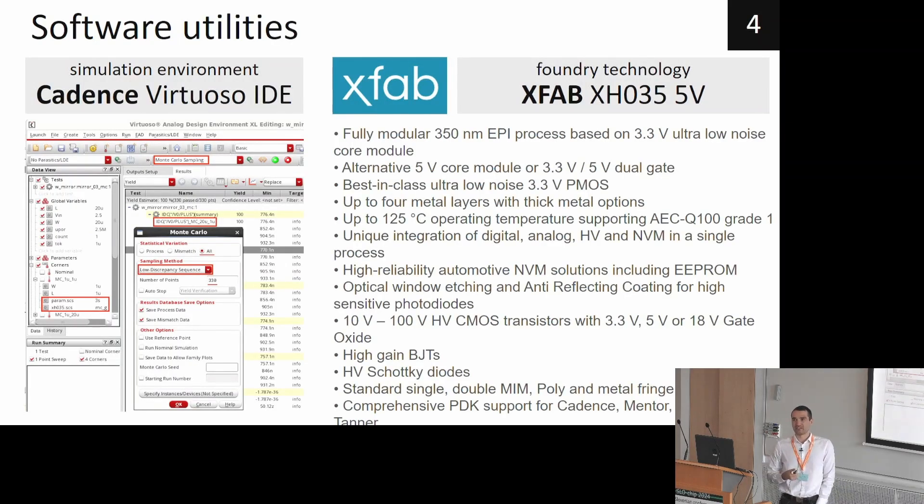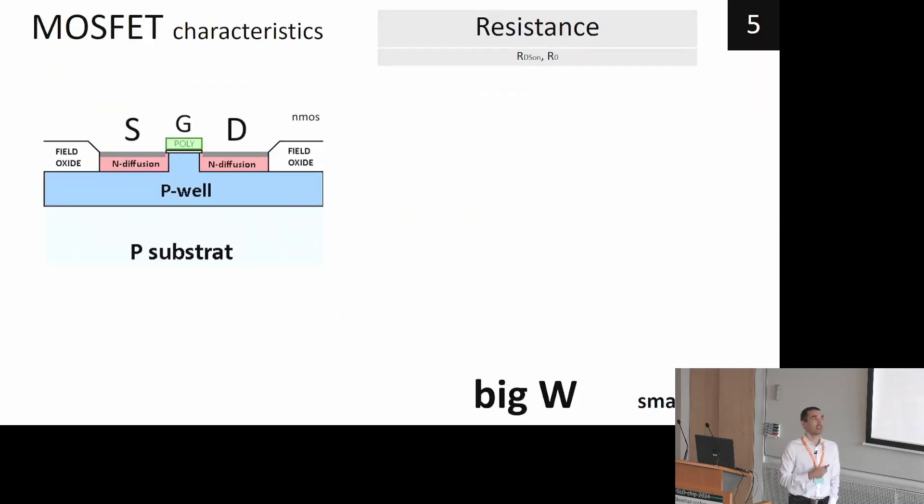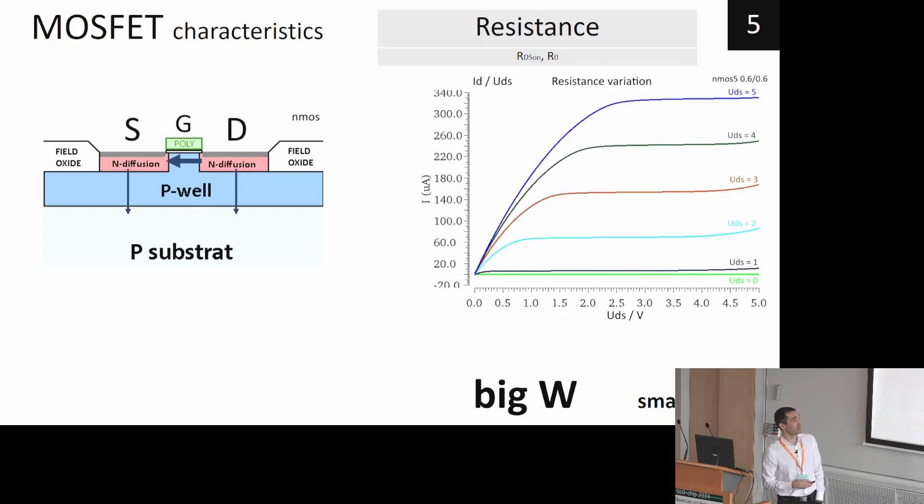The research was done in XFAB 350 nanometer technology and in Virtuoso design development environment. So let's look at the MOSFET resistance. The MOSFET resistance is caused by the channel resistance and some leakage resistance to the substrate, and this causes even when the transistor is fully open some slope and it can be even a few millivolts voltage drop